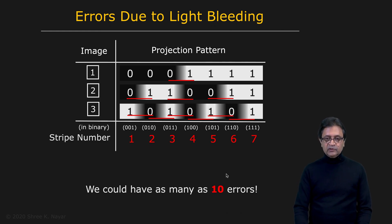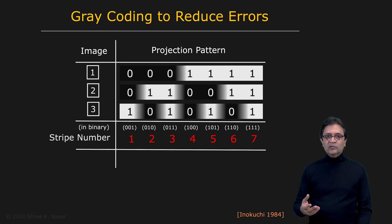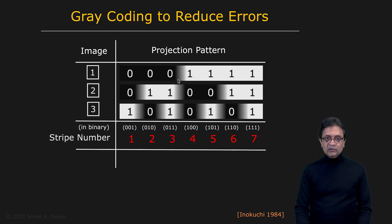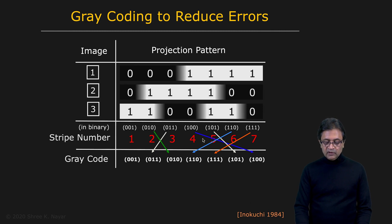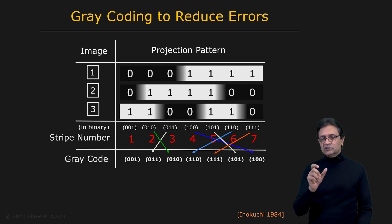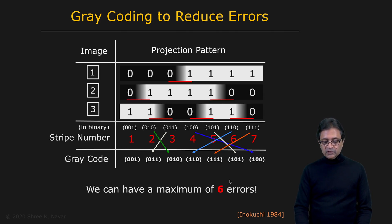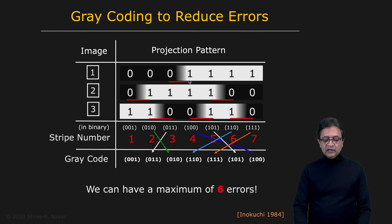This brings us to the idea of gray coding, which mitigates the problem. It doesn't resolve it completely, but substantially reduces the number of transitions. By simply swapping the numbers assigned to the stripes — for instance making the third one two and the second one three — you change the binary code associated with each number. In doing so, you reduce the number of transitions from ten to six in this particular case. You're not losing any information, just changing the stripe numbering, but gaining in terms of fewer transitions.